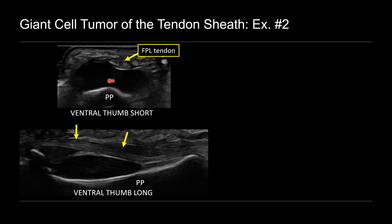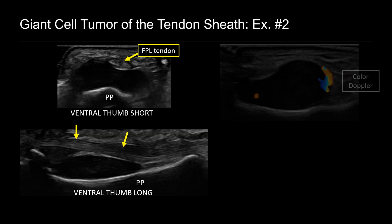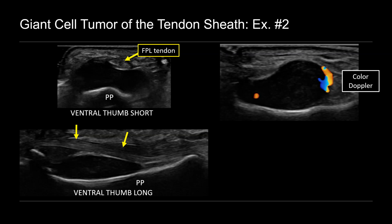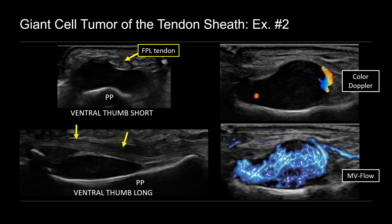Initially, you may wonder, could this be a cyst? It appears fairly hypoechoic to almost anechoic. When we adjust the grayscale, it appears a bit more solid. But again, add color Doppler and you'll see internal vascular flow confirming that this is a solid mass, which we can bring out with MV flow — microvascular flow imaging — not that robust vascularity. And this turned out to be another giant cell tumor.